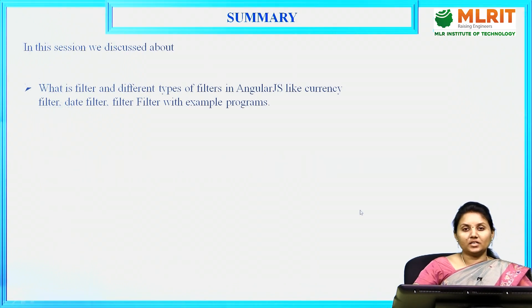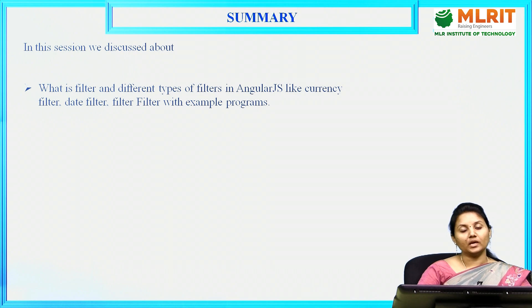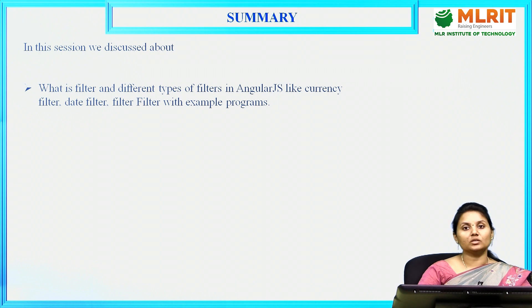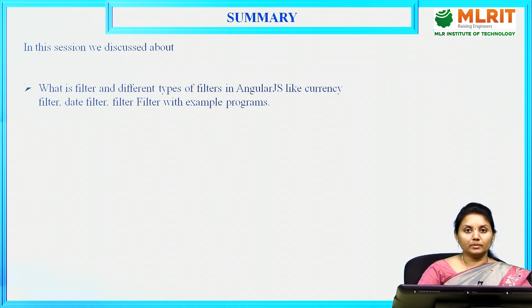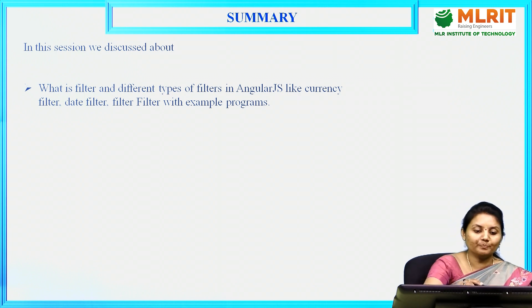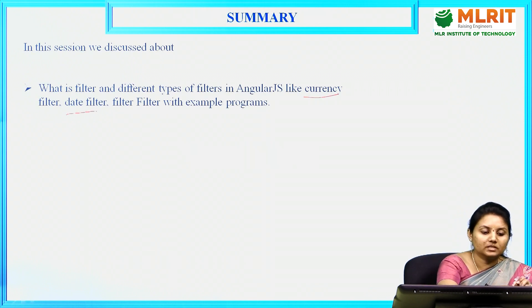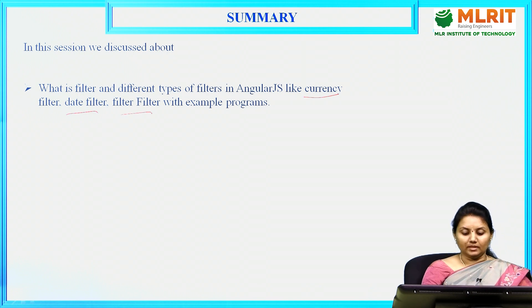Hope you all understood what filters we have discussed and that using AngularJS with CDN links is very easy. If there is no internet, you can just download and keep the zip file and import that AngularJS file into the script tag source — that will be enough. In this session, we discussed what a filter is, different types of filters — currency, date, and filter filter — with examples. Thank you all.